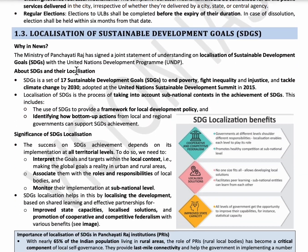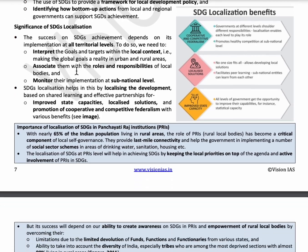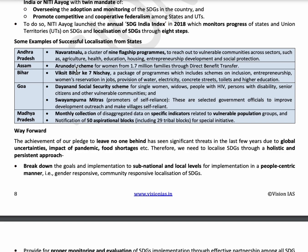The next topic is Localization of Sustainable Development Goals. The SDGs were introduced by the United Nations Sustainable Development Summit in 2015. There are 17 SDGs aimed at ending poverty, inequality, and injustice, and tackling climate change by 2030. To effectively implement SDGs at the local level, the Ministry of Panchayat Raj and UNDP signed a joint statement of understanding. Some states have implemented localization of SDGs: Andhra Pradesh launched Navrat Nalu Programme to support vulnerable people in agriculture, health, education, housing, entrepreneurship, and social protection.